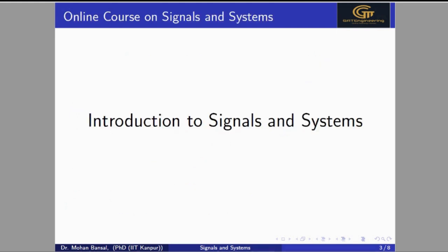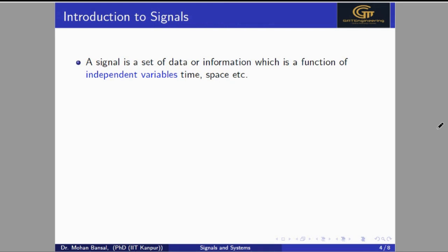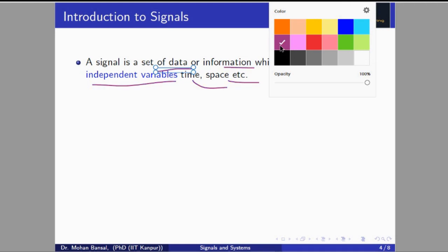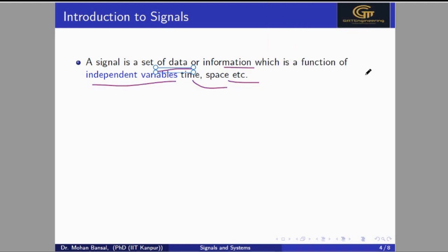Today we start our discussion on the introduction to signals and systems. Before starting, we should know what a signal is and what a system is. The goal of today's class is to introduce signals and systems. A signal is nothing but a set of data which contains some information, and which is a function of independent variables. The independent variables are time and space.